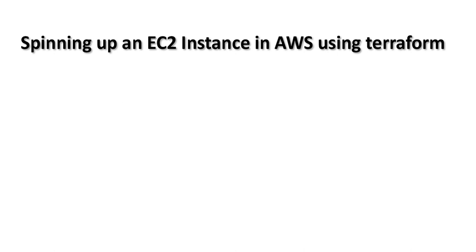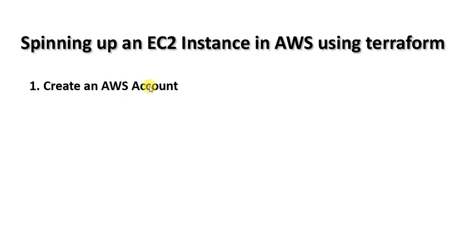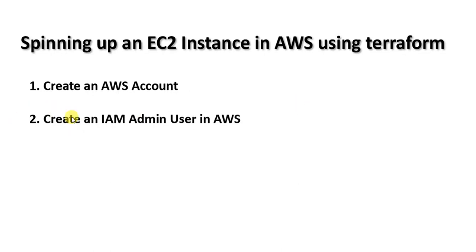Hello everyone, in this video I'm going to show you how to spin up an EC2 instance in AWS using Terraform. I'll list out the steps we need to follow. The first step is we need to create an AWS account. If you don't have an AWS account, you can create one — you can create a free tier account if you want. After creating an AWS account, we need to create an IAM admin user in AWS.